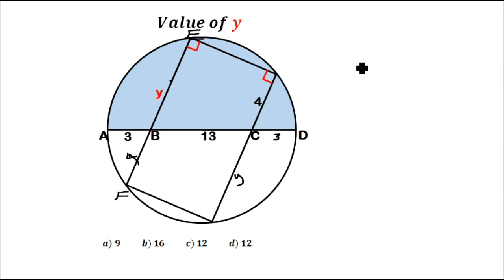AB times BD should equal EB times BF—that is using the theorem of intersecting chords.